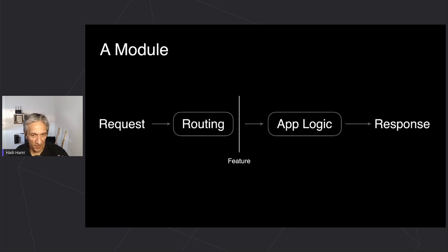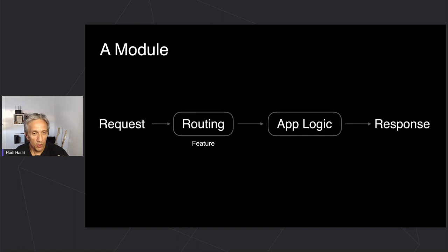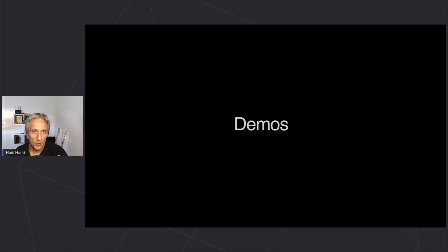Ktor also has the concept of a 'feature', which you may know from other technologies as an interceptor, middleware, or filter. These features can be placed almost anywhere — before a request, after a request, before processing another request. Features can handle things like encoding, compression, and even routing itself is a feature that comes out of the box. We essentially feel any Ktor application needs routing, but under the covers routing is itself a feature.